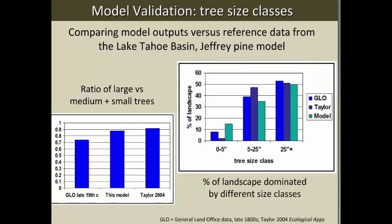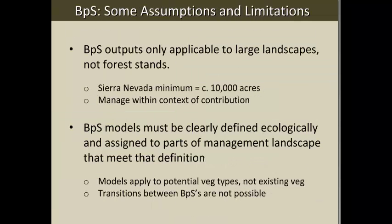You can also validate structural characteristics. For the Lake Tahoe Basin Forest Plan, we compared the ratio of large versus medium-plus-small trees in General Land Office data from the late 19th century, the model output, and a 2004 paper by Alan Taylor — which necessarily undersampled small trees since it was essentially stump counting a century after logging. We also compared percent of the landscape dominated by different size classes. This is classic model building: iteratively assessing accuracy and validation, then adjusting internal model characteristics to better reproduce the dynamics seen in reference information.